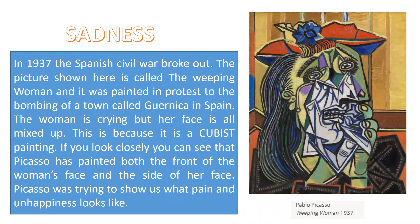Sadness. In 1937, the Spanish Civil War broke out. The picture shown here is called The Weeping Woman and it was painted in protest to the bombing of the town called Guernica in Spain. The woman is crying but her face is all mixed up. This is because it is a cubist painting. If you look closely, you can see that Picasso has painted both the front of the woman's face and the side of her face. Picasso was trying to show us what pain and unhappiness look like.